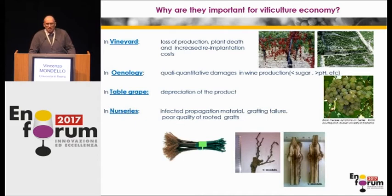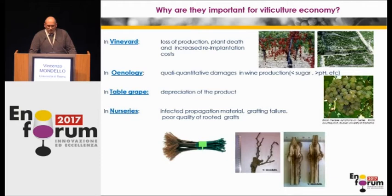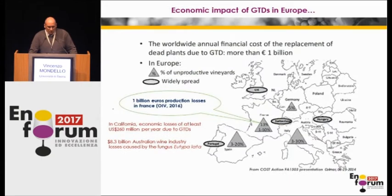Why are they important? Because these have consequences in the vineyard, in enology, and for the production of table wine as well. In the vineyard, we have lost production, plant death, and increased re-implantation costs. In enology, we have effects on quality. For table grape, there is a depreciation of the product due to the presence of ESCA. And in nurseries, you can also have problems due to the fact that these diseases weaken the plant — they are difficult to sell, and you even have grafting problems.